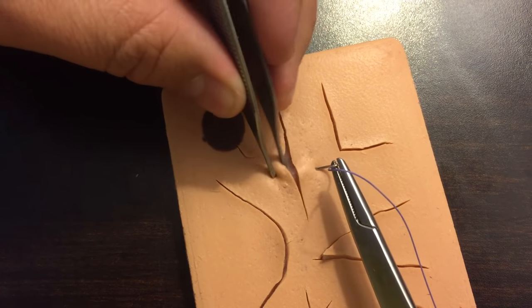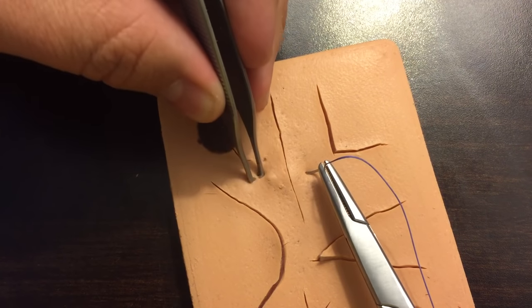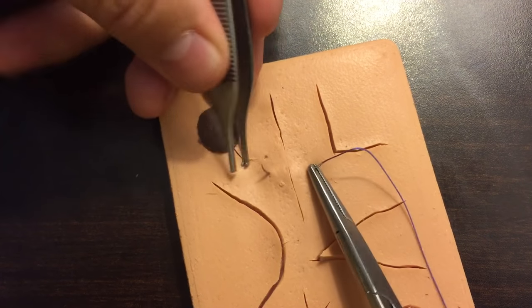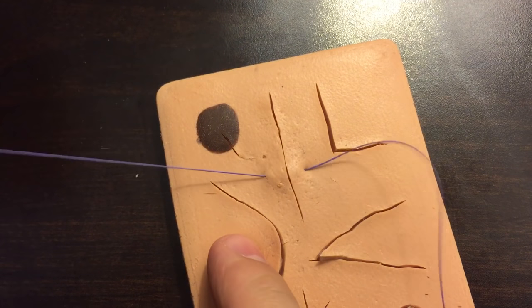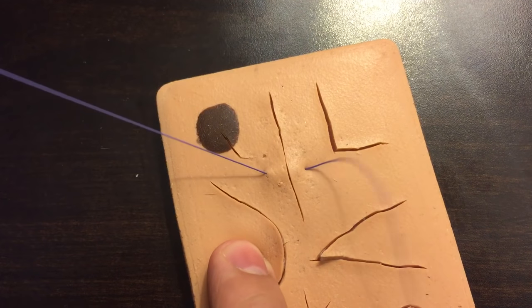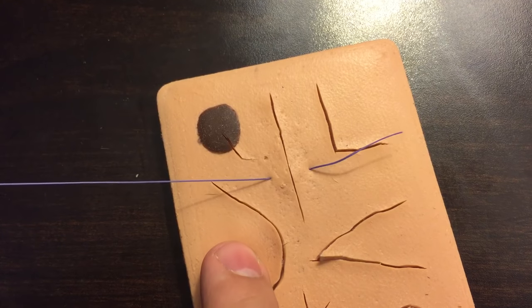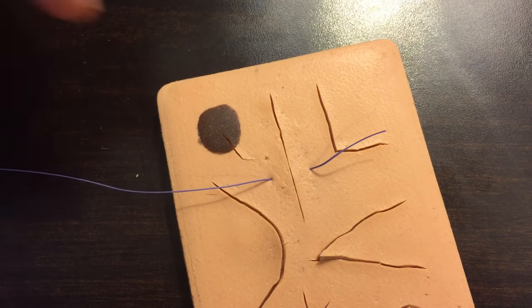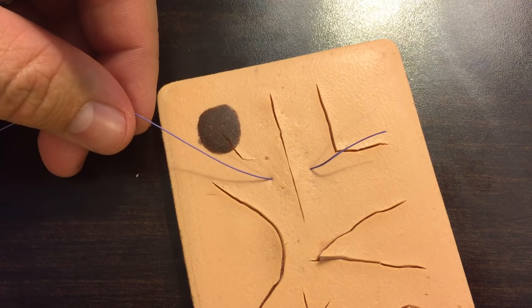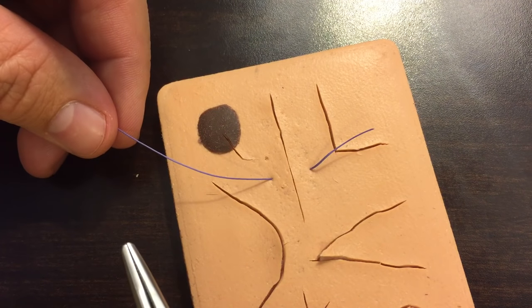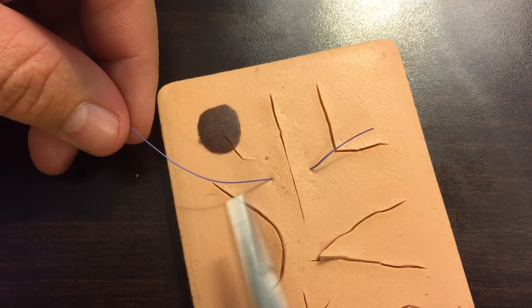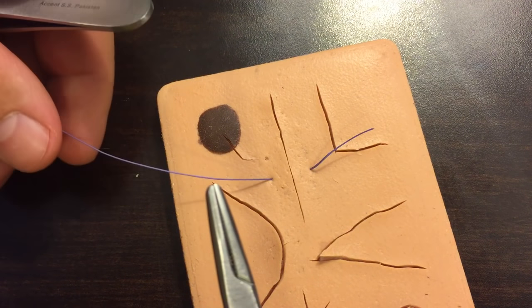For proper technique on throwing certain types of sutures, feel free to check out my other videos. I'm going to pull this through so that we've got just a little tail here on the end. Now to do a proper instrument tie, have your tail roughly half inch to an inch. You don't want to have it too short, but you also don't want to have it too long.